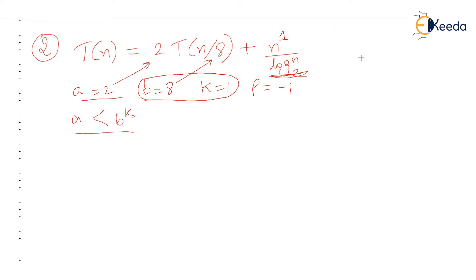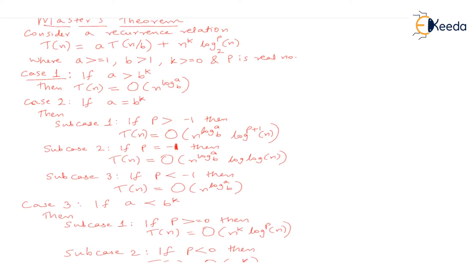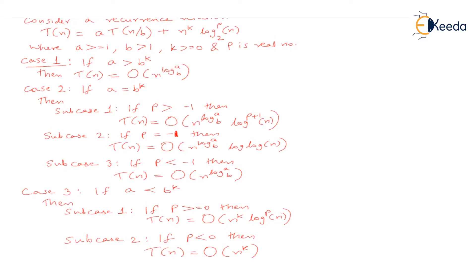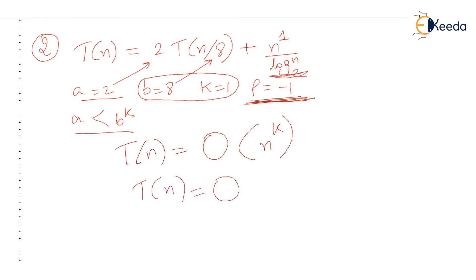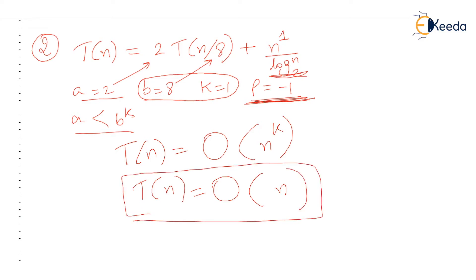We are again in Case 3. In Case 3, if p is greater than or equal to 0 then T(n) is Big-O of n^k · log^p(n); but if p is less than 0, sub-case 2 arises and T(n) is simply Big-O of n^k. In our example p is minus 1, which is less than 0, so sub-case 2 arises. Therefore T(n) is Big-O of n raised to k, and since k is 1, this is O(n).